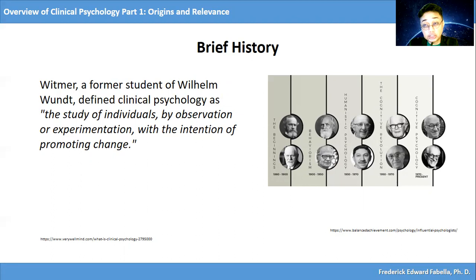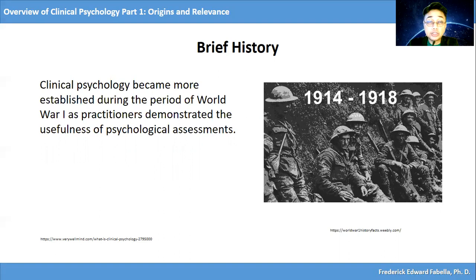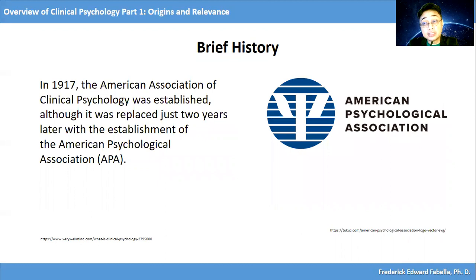Clinical psychology became established during the period of World War I as practitioners demonstrated the usefulness of psychological assessments. In 1917, the American Association of Clinical Psychology was established, although it was replaced just two years later with the establishment of the American Psychological Association.